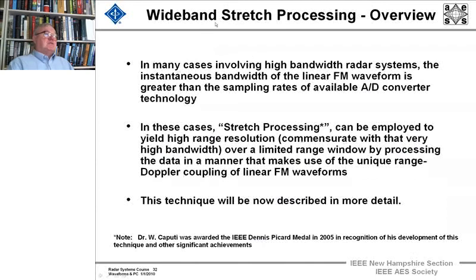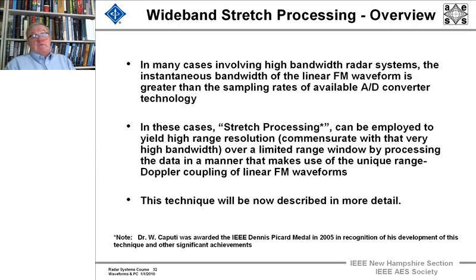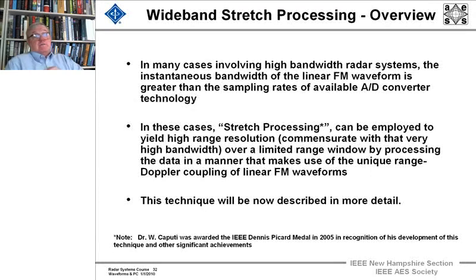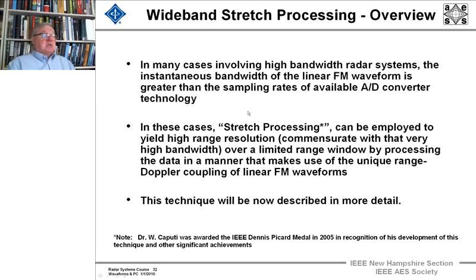Stretch processing operates quite differently. In many cases, a high-bandwidth radar system has instantaneous bandwidth far greater than the sampling rates of an A-to-D converter. A good example would be a gigahertz of bandwidth at X-band — more than you can handle with off-the-shelf A-to-D converters, where you want to get a lot of bits. In these cases, stretch processing is used.